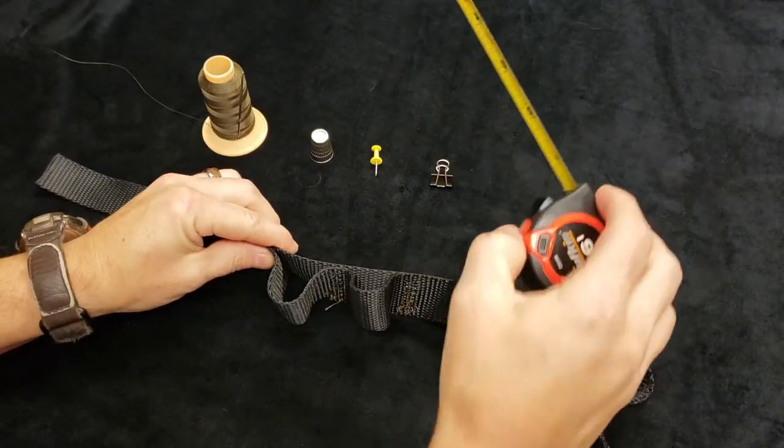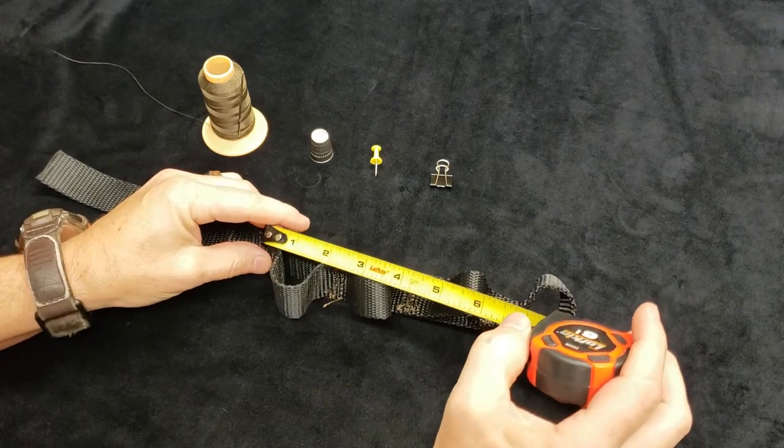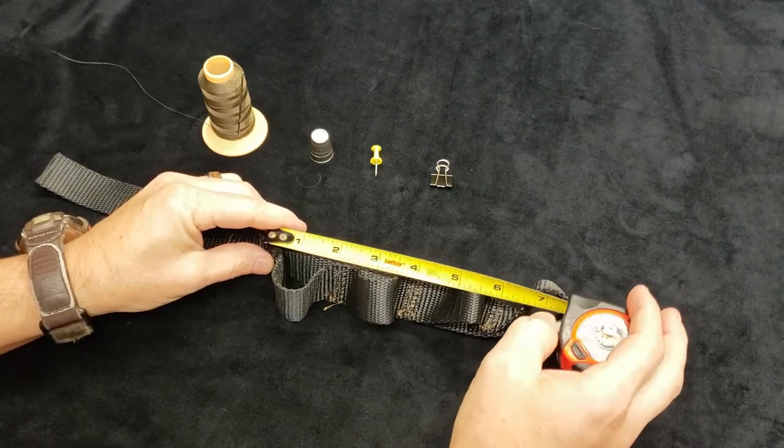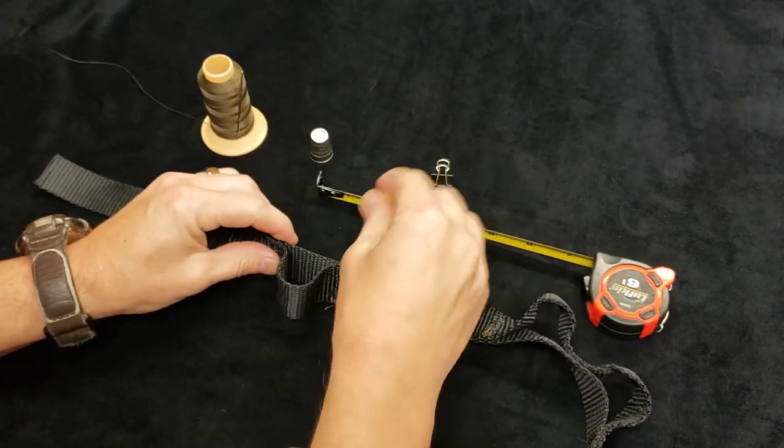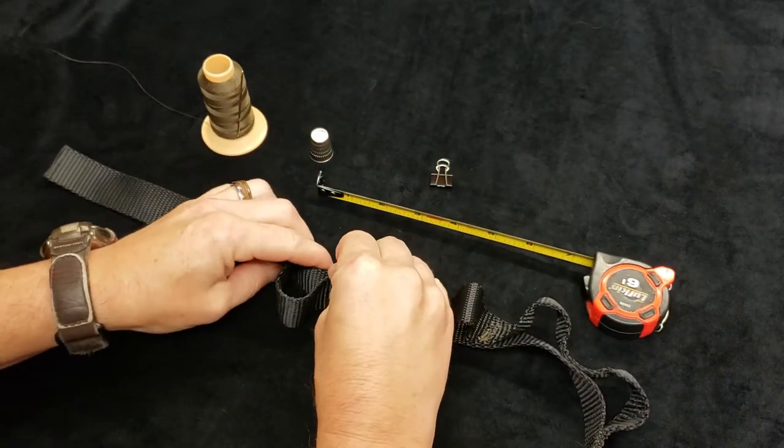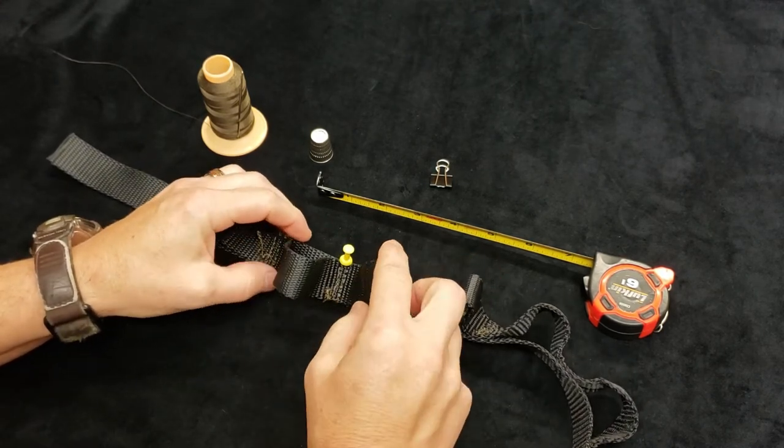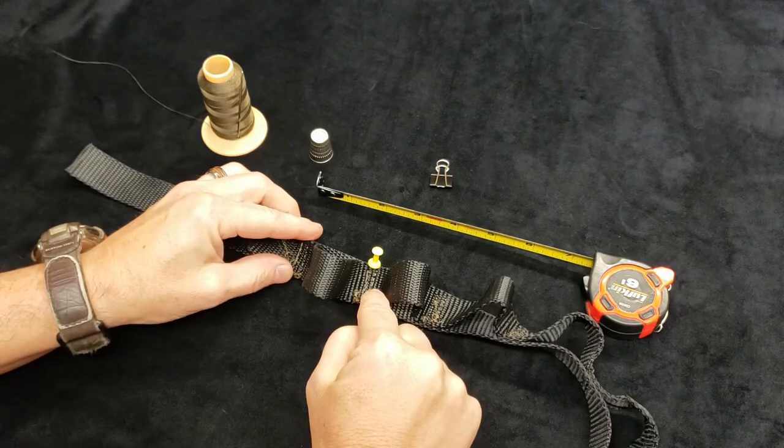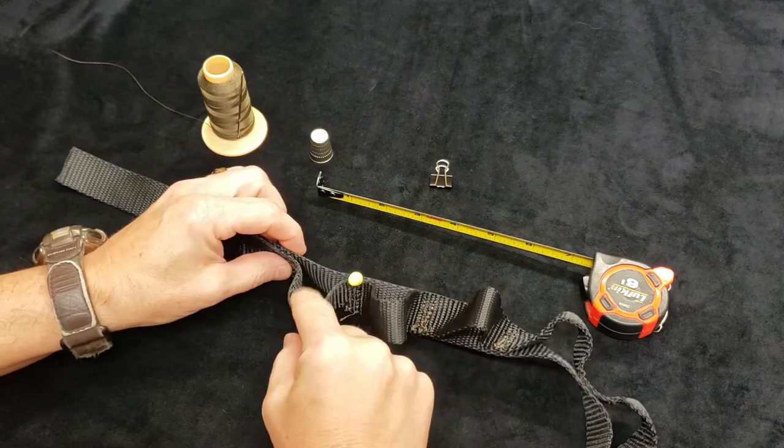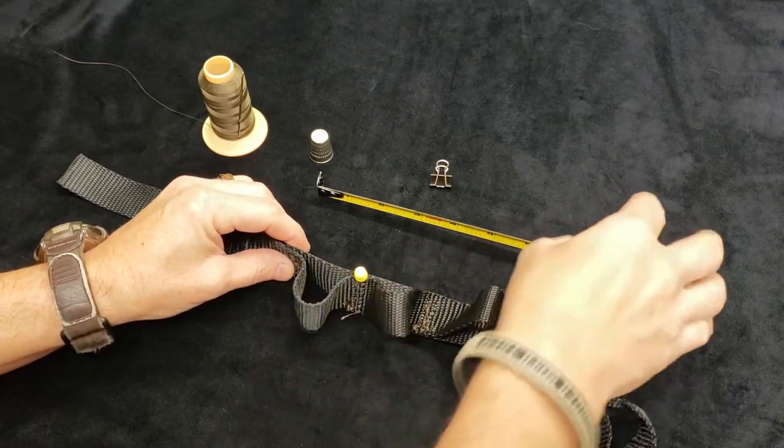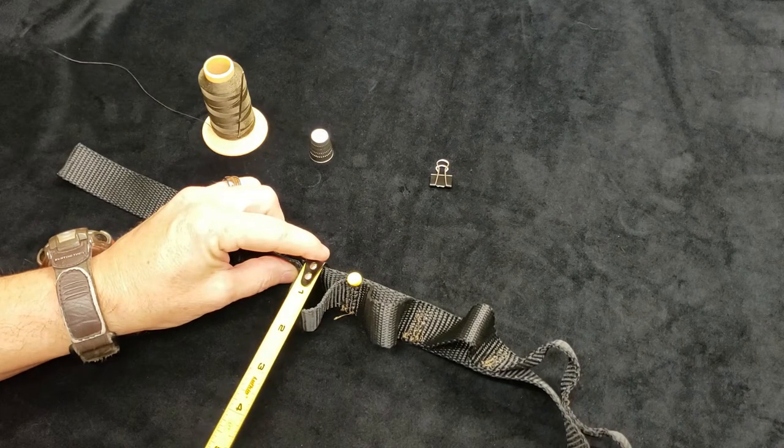And then what you do is measure from there two inches over. And then at two inches over, you're going to push your push pin in to your bottom strap just to mark it. And then you'll take your loop strap and you push it upward to make this go up until you make your loop the size of an inch and a quarter.